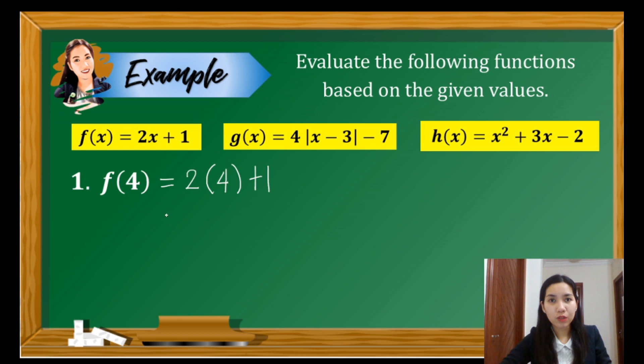Following the order of operations, we have to multiply before we add. So we have 8 plus 1. Combine these two, it becomes 9. So the value of the function f when x is 4 is 9. Let's move to another example.